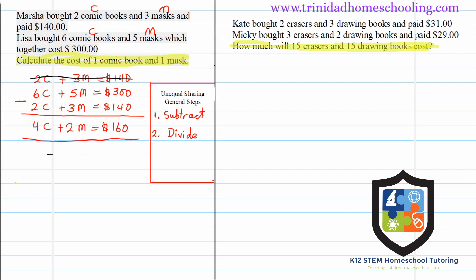You need to have a good command of your multiplication tables — not just rote memorization, but knowing them in terms of division and addition as well. Our goal here is to find one of each item. Looking at these numbers — 4, 2, and 160 — we know they are all evenly divisible by 2 without a remainder.